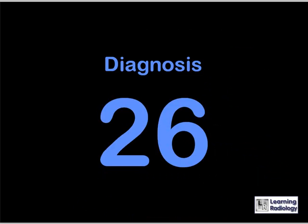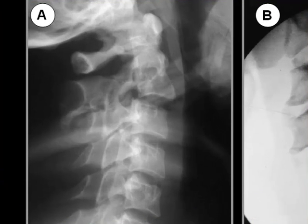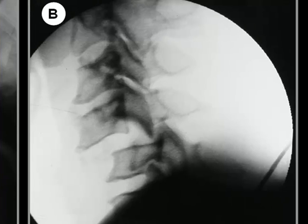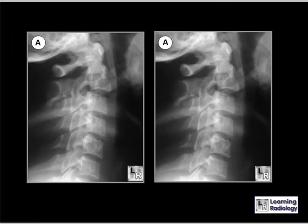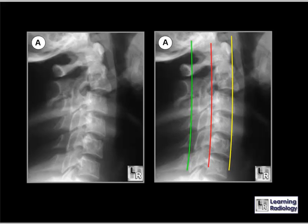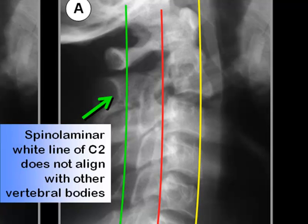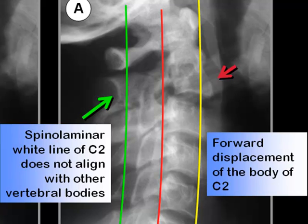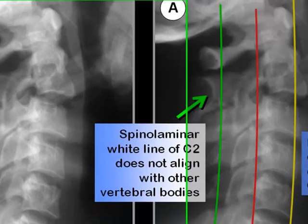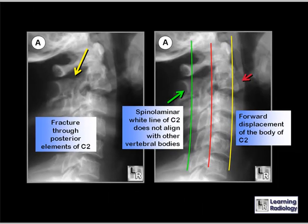Two different individuals fell, injuring their necks. In patient A, we observe the three lines connecting the anterior and posterior aspects of the vertebral bodies and the spinal laminar line — these three cervical lines should be parallel in a smooth curve. There is forward displacement of the body of C2 (red arrow), and the spinal laminar line of C2 does not align with the other vertebral bodies. This is a fracture through the posterior elements of C2, called a Hangman's fracture.